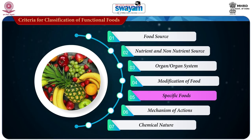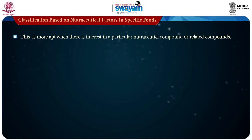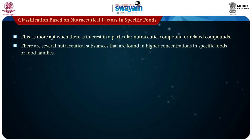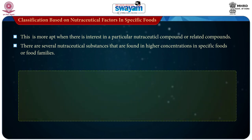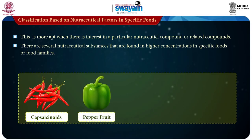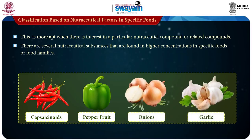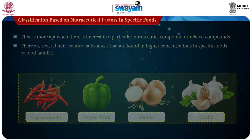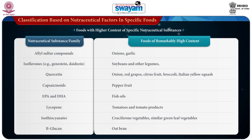Now let us see the next classification, which is based on nutraceutical factors in specific foods. This classification is more apt when there is interest in a particular nutraceutical compound or related compounds. There are several nutraceutical substances found in higher concentrations in specific foods or food families — these include capsiconoids found primarily in pepper fruit, and allyl sulphur organosulphur compounds particularly concentrated in onions and garlic. Foods with higher content of specific nutraceutical substances have been presented in a table: the first column shows nutraceutical substances or family and the second column shows foods of remarkably high content.